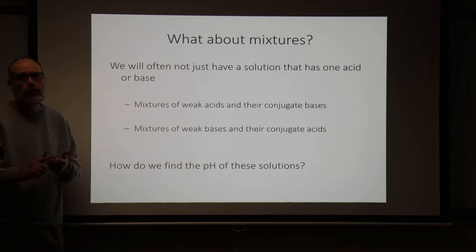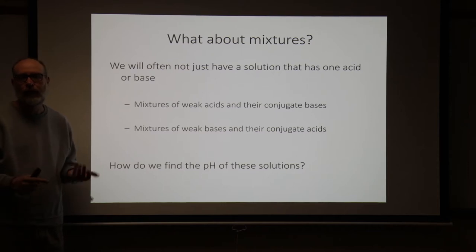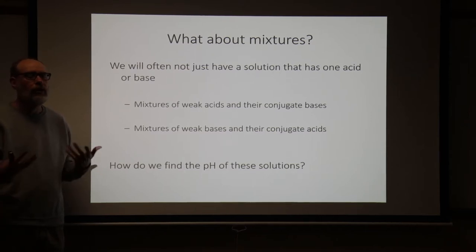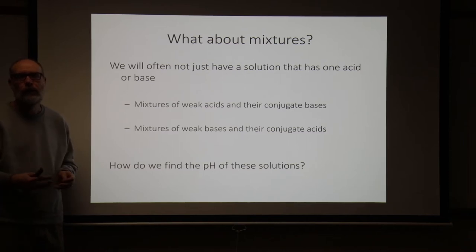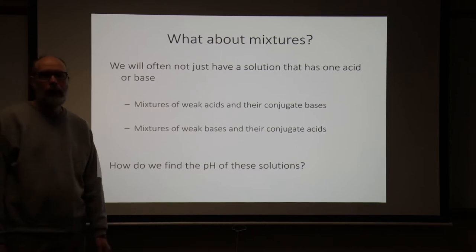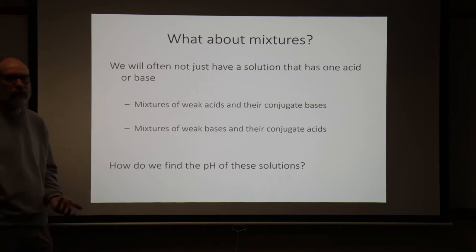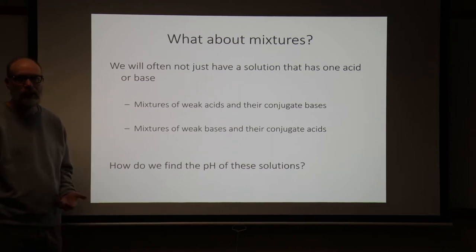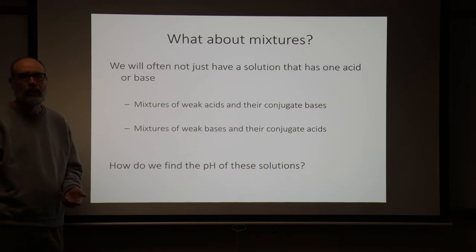Now we've dealt with strong acids and strong bases and weak acids and weak bases. There's one more case where we need to understand and be able to calculate what the pH would be — we need to understand how equilibrium plays out. And that is what we're going to call a buffer. A buffer is simply a mixture of a weak acid and its conjugate base, or a weak base and its conjugate acid.